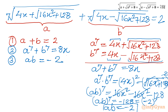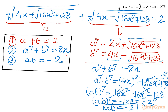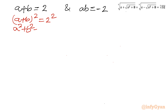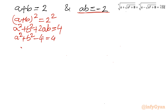Our system of equations is: a plus b equals 2, and ab equals minus 2. Now squaring equation 1: (a plus b)² equals 4, so a² plus b² plus 2ab equals 4. Since ab equals minus 2, we have a² plus b² minus 4 equals 4, giving a² plus b² equals 8.